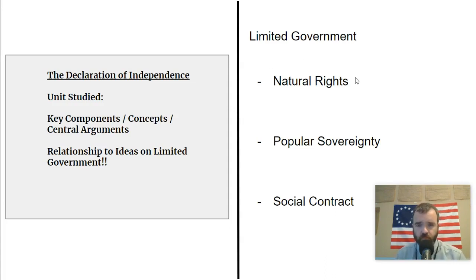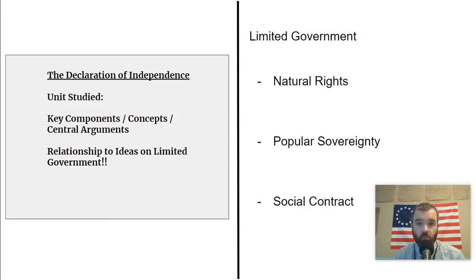First is natural rights. Thomas Jefferson really echoes John Locke when he says that all men are created equal and they have the right to life, liberty, and the pursuit of happiness. Locke had said that they had the right to life, liberty, and property. So these are rights that people are born with, and this is something at the core of American philosophy towards limitations on government. These natural rights can't be taken away.